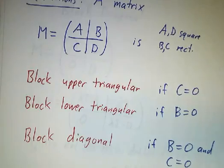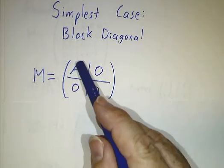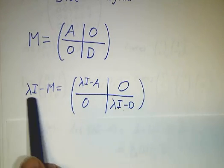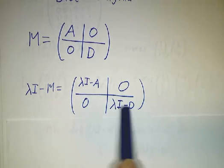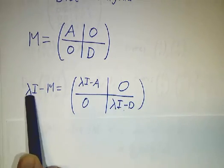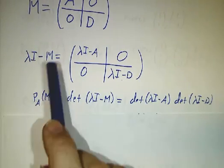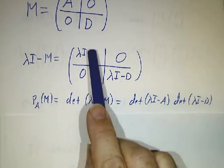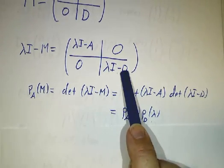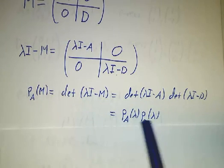Let's walk through the cases one at a time and see why this works. The simplest case by far is when you have things that are block diagonal — B and C are zero and we just have an A in the upper left and a D in the lower right. When we compute the characteristic polynomial, lambda*I minus M gives you the identity minus A in the upper block and the identity minus D in the lower block. These identities are different sizes; for example, if this is a 3x3 block and this is a 5x5 block, then you have a 3x3 identity, a 5x5 identity, and an 8x8 identity overall.